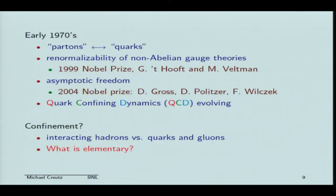As we go into the '70s, the partons began to be more and more identified with the quarks. This was the time when the renormalizability of the non-abelian gauge interaction was demonstrated — which 't Hooft and Veltman got the prize for in '99. It was also the time that asymptotic freedom was discovered, and David was involved with that. And so this theory — QCD, this quark-confining dynamics — was beginning to evolve.